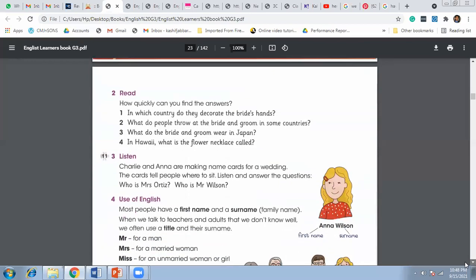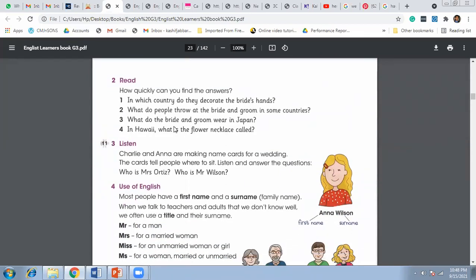After completing page 22, we started the question answers. Question number two: How quickly can you find the answers? In which country do they decorate the bride's hand? The answer is India. What do people throw at the bride and groom in some countries? Rice and flower petals. What do the bride and groom wear in Japan? Kimono. In Hawaii, what is the flower necklace called? It's called a lei. Now you can write these answers in your book.